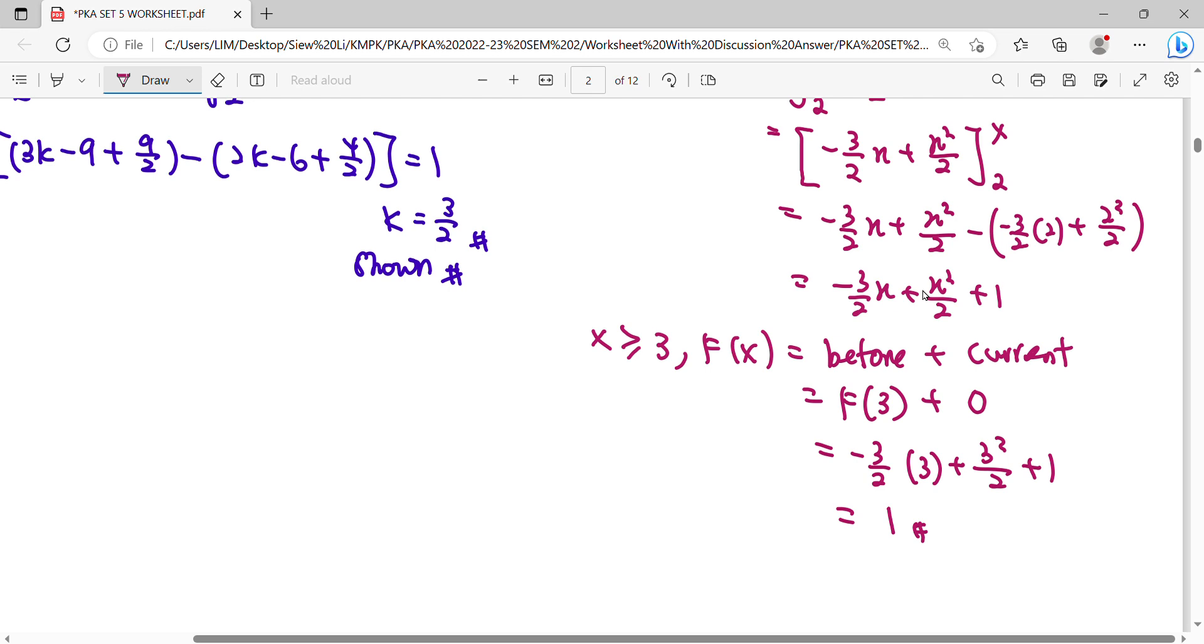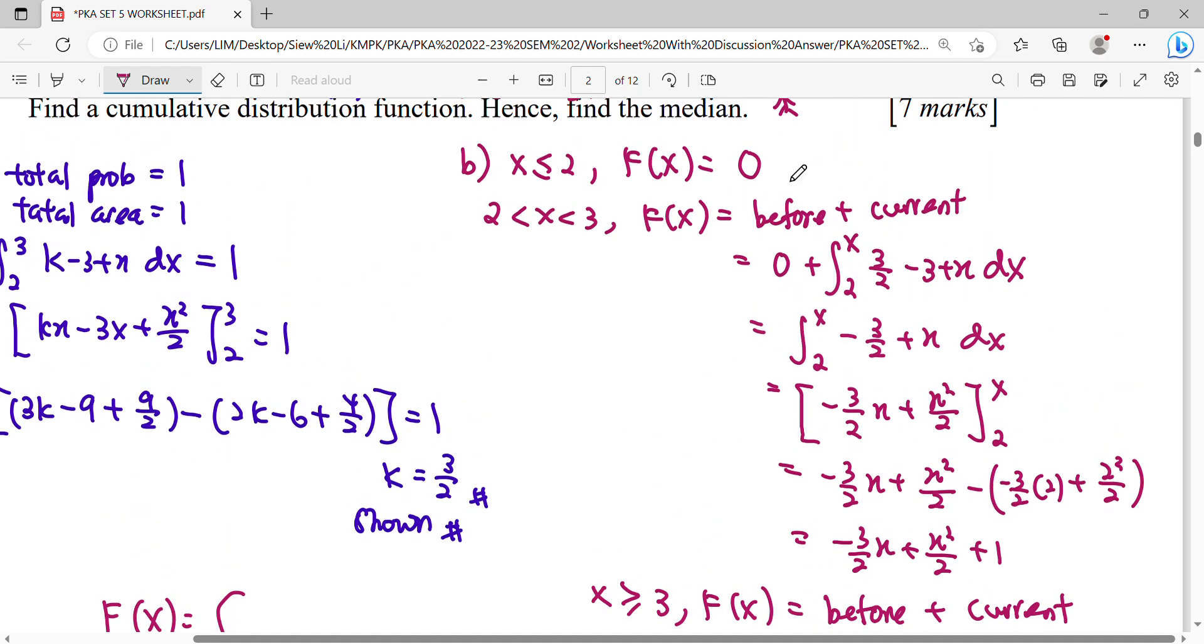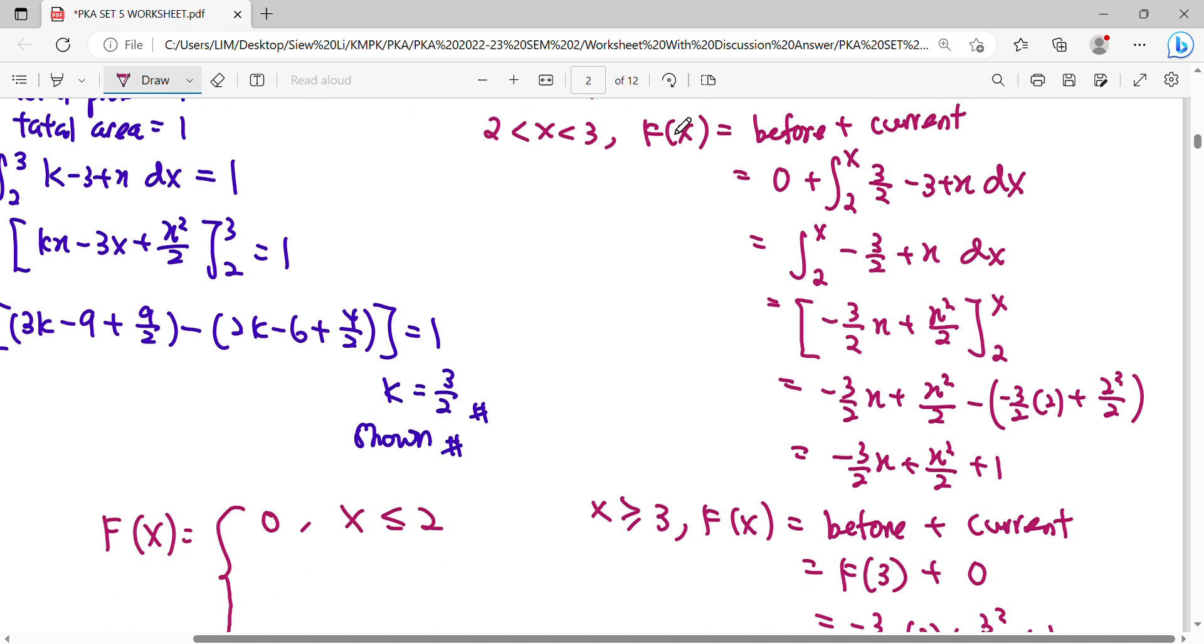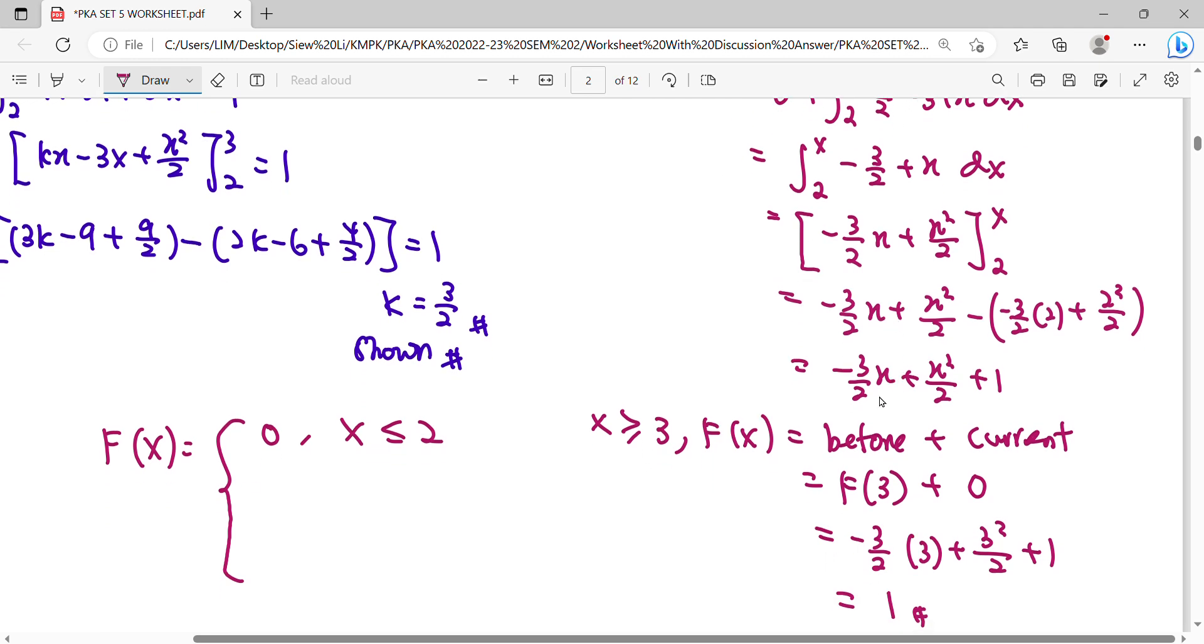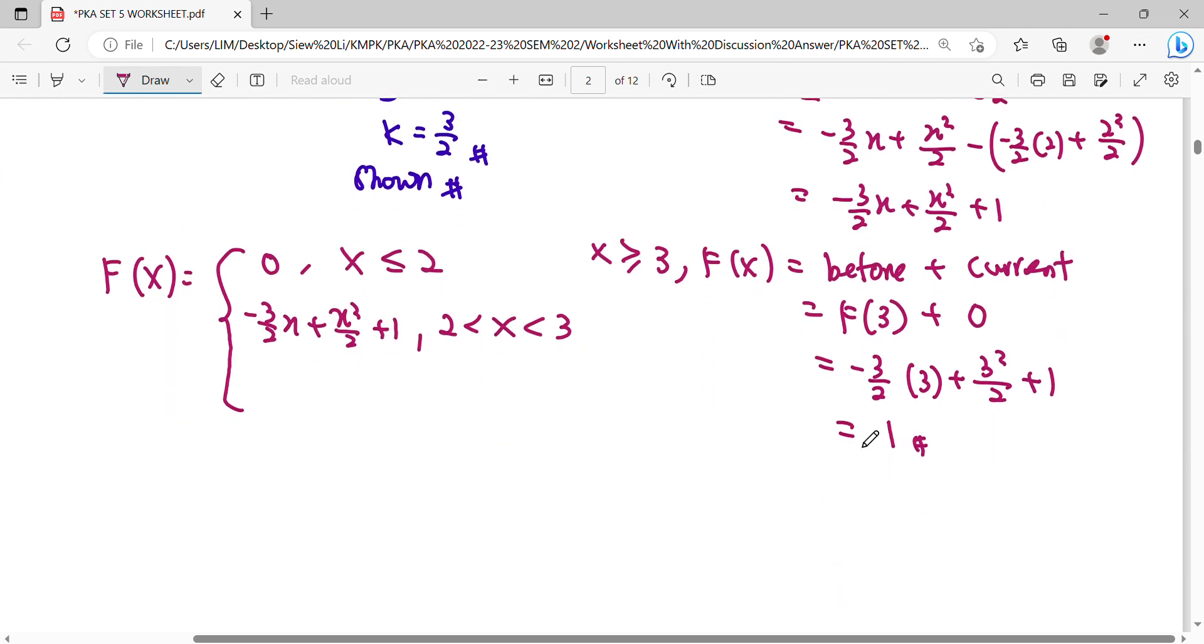So after all these 3 steps, we have to write it in our function. F besar, apa dia? Catat balik. Apakah function kamu dan apakah interval kamu? So the first one, 0 for X less than equal to 2. So the second one, negative 3 over 2 X plus X squared over 2 plus 1, it is 4, in between 2 and 3. Then lastly we get 1, it is 4, X more than equal to 3.